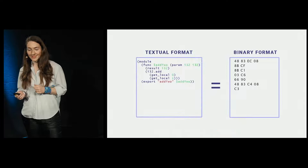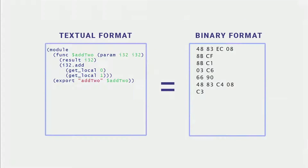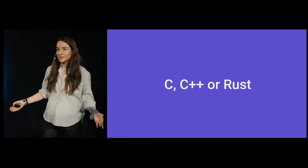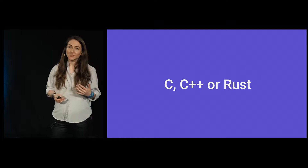This is what WebAssembly looks like. It has a textual format, .wat, that you can easily read, but the binary format, .wasm, is what you actually deliver to the browser. What WebAssembly enables you to do is take things like C, C++, or Rust code and compile it into what's called a WebAssembly module. You can load that module into your application and call it from JavaScript.